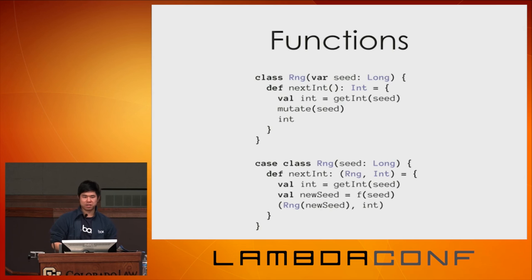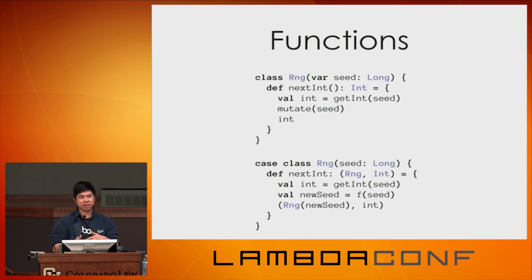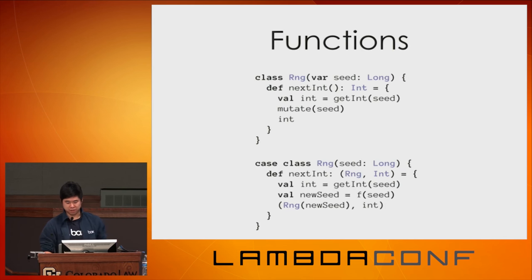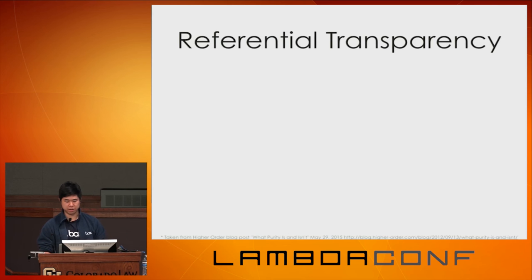It might seem tedious to continuously get the next state each time. There is a really nice way to do it — the keyword is 'state monad' if you want to look it up. This property I've been discussing has a name: referential transparency. It describes what I enjoyed about physics and math and allows us to reason about our programs in a principled way.